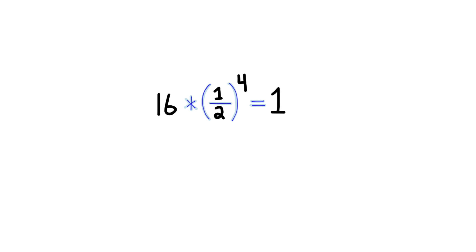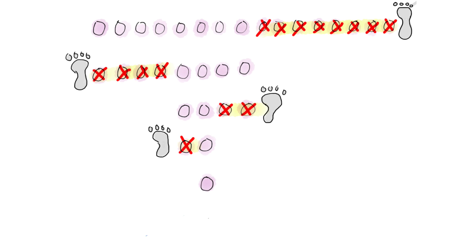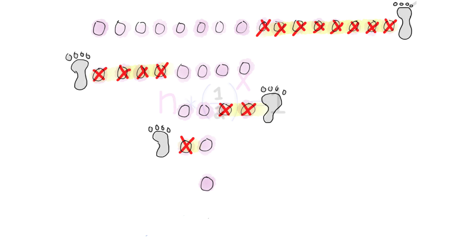Now let's generalize. We want to find out how many steps it takes for n items to be reduced to 1. When n is 16, it takes 4 steps. What does it take for n items? That is, given any n, how many steps will it take?